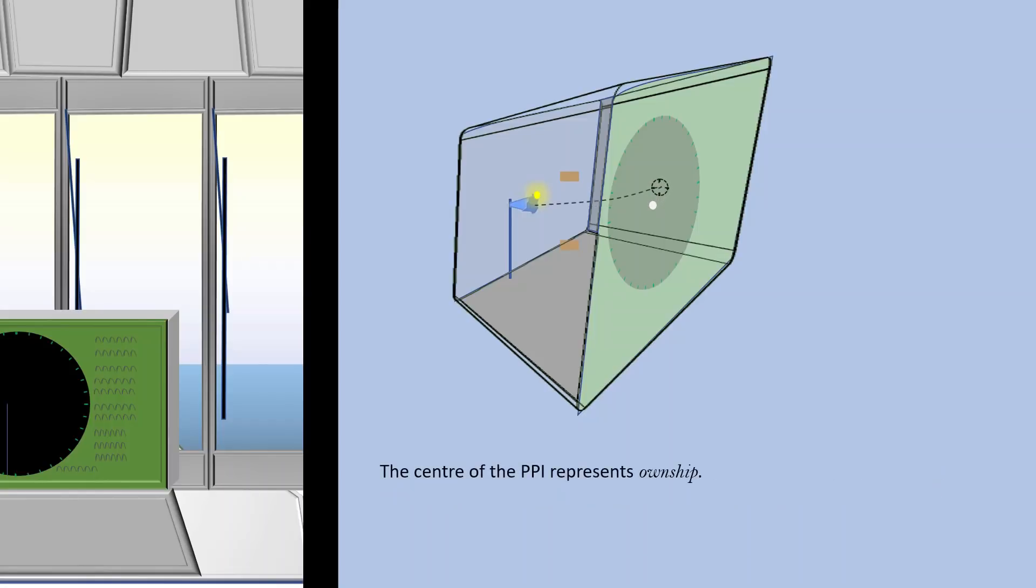The center of the PPI represents own ship. The electron emission is triggered when the reticule is at the desired position which is proportionate with the distance of the target from the own ship.